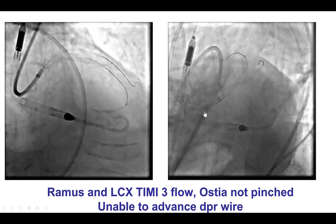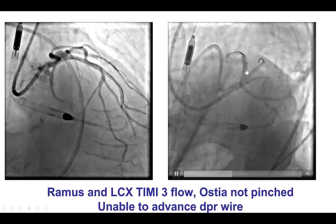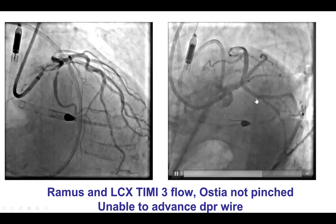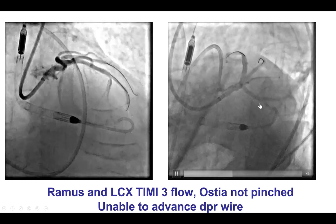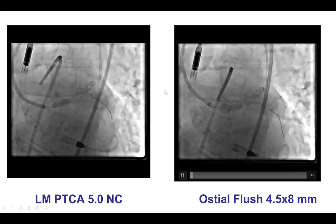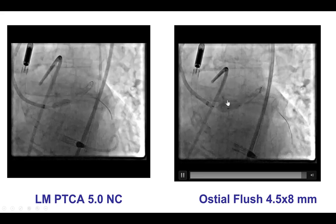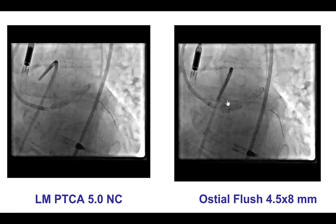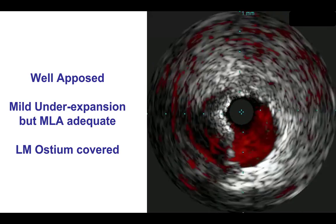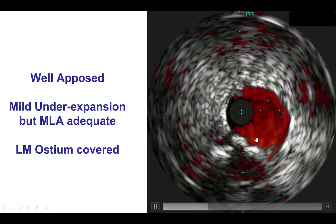We thought about doing pressure wire in the LAD and the circumflex to ensure we did not have significant lesion in the ramus as well as the circumflex. However, there was good flow and we didn't see any lesion, and the pressure wire could not be delivered, so we ended up not doing that. We did additional post-dilation of the left main with a 5.0 mm NC balloon and then the ostial flush to facilitate subsequent re-engagement of the lesion. On the repeat intravascular ultrasound, the left main was expanded well.